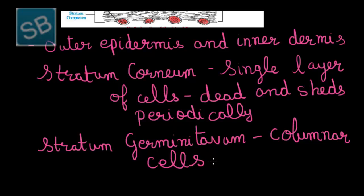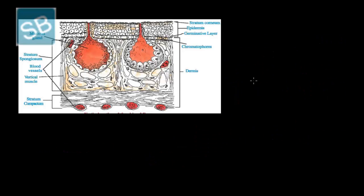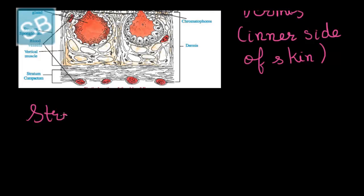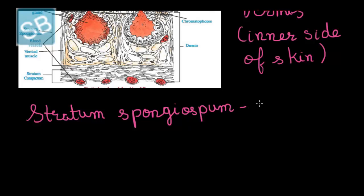Stratum germinativum is made up of columnar cells, and new cells are also formed from this layer. The inner layer is called dermis, and it also consists of two layers: the outer portion stratum spongiosum and the inner portion stratum compactum. The stratum spongiosum is the outer layer and it consists of a loose network of epithelial cells.